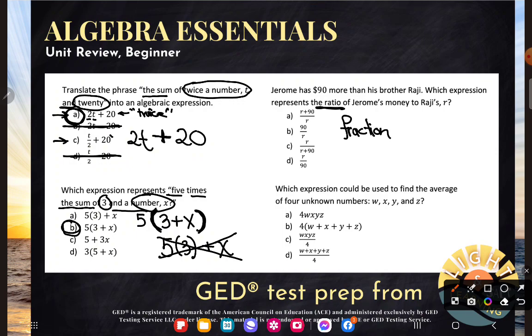So they want us to write a fraction. And just like with the sum, it's the same thing with fractions with these ratios, except they're going to tell us something to, that's the fraction bar, something else. So let's see. Which expression represents the ratio of Jerome's money to Raji's R? So they want Jerome's up on top and Raji's on the bottom. It goes in the exact order in which they gave it to you. So if they say Jerome to Raji, it's Jerome on the top, Raji on the bottom.